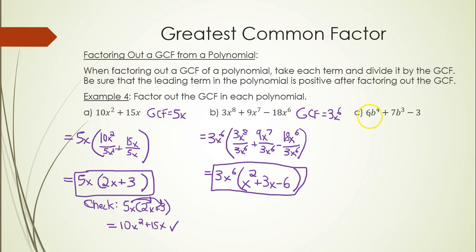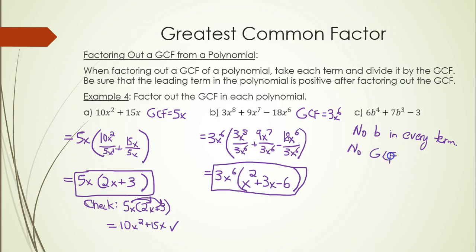In part c, 6, 7, and 3 are divisible by nothing other than 1, so there's no numeric GCF. Furthermore, b is not present in every term, which means there is no GCF at all. The greatest common factor is 1, and since b is missing from at least one term, there is nothing to factor out.